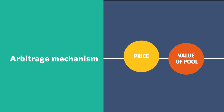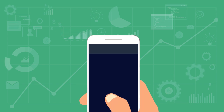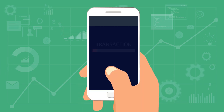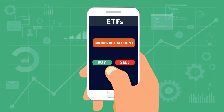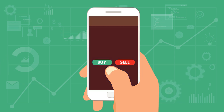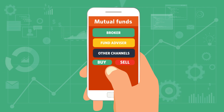When you buy or sell an ETF, its price on the exchange is generally going to be pretty close to the value of its underlying assets. Because ETFs trade on a stock exchange, if you want to buy and sell ETFs you need a brokerage account — that's the only way you can access the stock exchange. Mutual funds, on the other hand, can be purchased from a broker, directly from a fund advisor, directly from the company, or through some other channel.